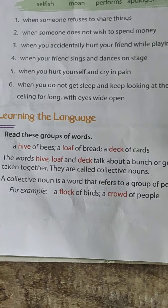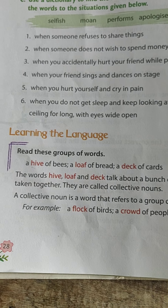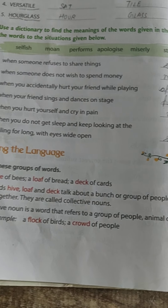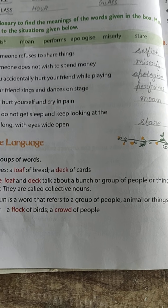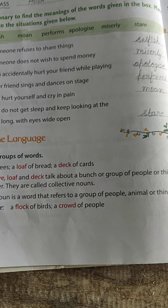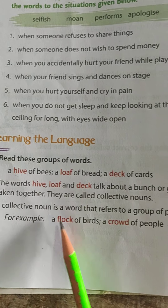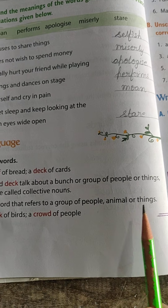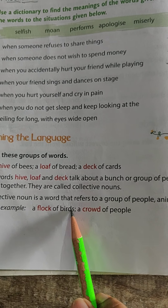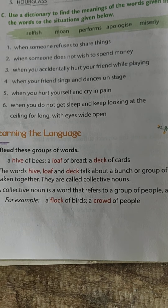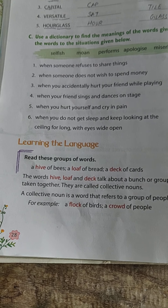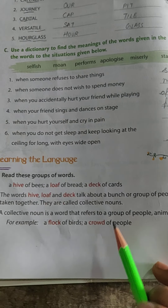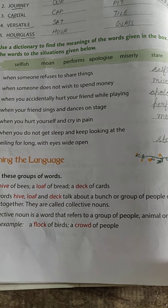They are called collective nouns. Hive, loaf and deck are collective nouns because we are talking about a bunch or group of people or things — it can be any group of people or things. A collective noun is a word that refers to a group of people, animals or things. For example, a flock of birds — when birds are flying together we say a flock of birds is flying over the sky. Another example is a crowd of people; crowd is also a collective noun.